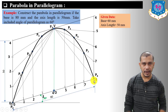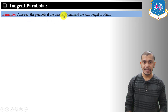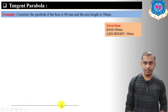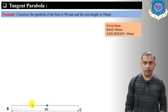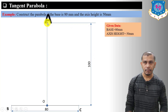Now let's move on to the tangent method to construct the parabola. Given: base is 80 mm and axis height is 50 mm. Draw base BC of length 80 mm. From the midpoint O of base BC, draw a line perpendicular to BC having length twice the axis — that is 100 mm. Mark this point A.